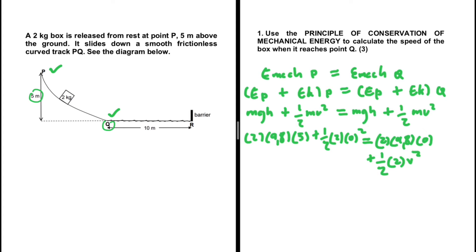The kinetic energy at Q is ½ × 2 × v². The term ½ × 2 × 0² gives us zero. Substituting: 2 × 9.8 × 5 = 98, and this equals 1 × v², so 98 = v². Taking square roots on both sides gives v = 9.9 m/s.